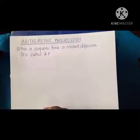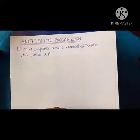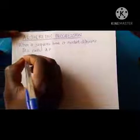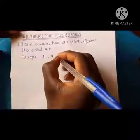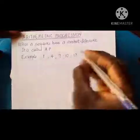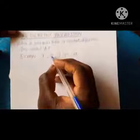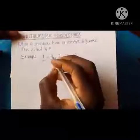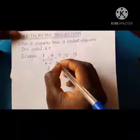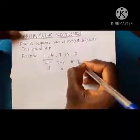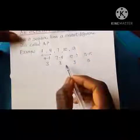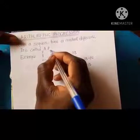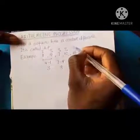Hi guys, today we'll be dealing with arithmetic progressions. When a sequence has a constant difference, it is called an AP. For example, if we have 1, 4, 7, 10, 13 — the difference between each term is 3: 4 minus 1 is 3, 7 minus 4 is 3, 10 minus 7 is 3. So this constant difference defines an AP. These terms are called t1, t2, t3, t4, and t5.